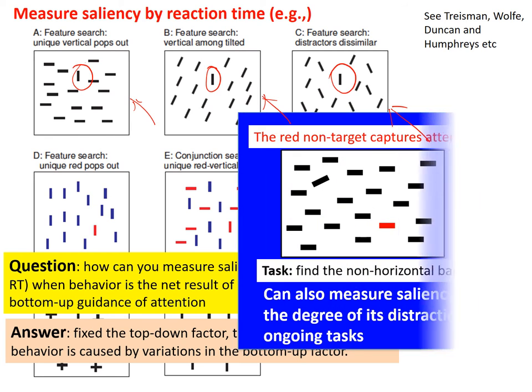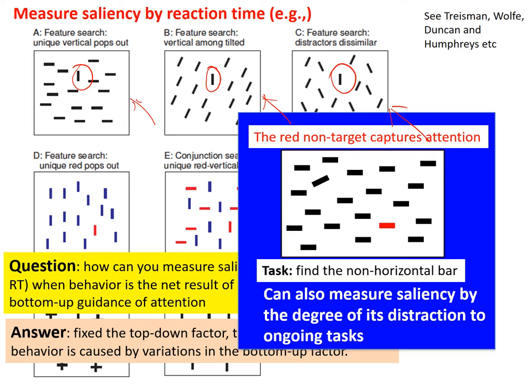One may ask how to measure saliency in behavior when behavior is the net result of both bottom-up and top-down guidance. The answer is: fix the top-down factor and measure variations in behavior as reflecting variations in bottom-up salience. You can also find cases when top-down and bottom-up factors conflict — in such cases, you can measure salience by the degree of distraction it causes to an ongoing task.